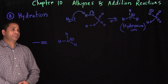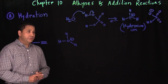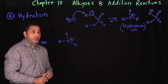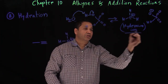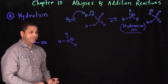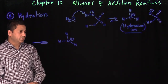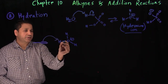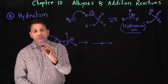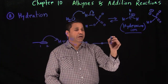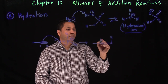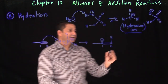The next reaction is hydration. As with alkenes, we use H2O and H2SO4. When mixed, they undergo an acid-base reaction and produce the hydronium ion. The hydronium ion then reacts with your alkyne. The double bond picks up the hydrogen: carbon two gets the hydrogen, and carbon one gets the positive charge.